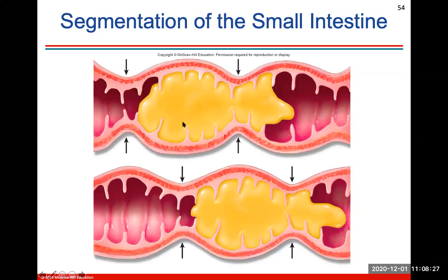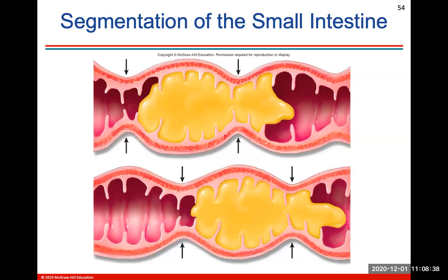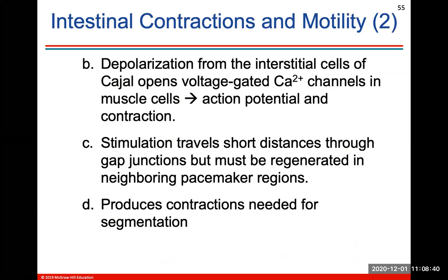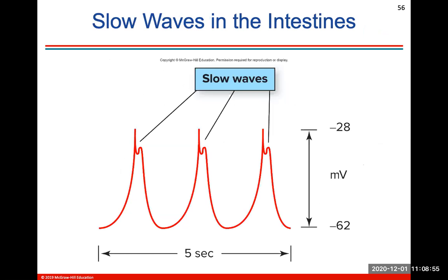Segmentation mixes things and then pushes it forward — that's what segmentation is. It mixes, pushes it forward, mixes, pushes it back. Peristalsis had more of a squeezing motion and occurred in the esophagus. These voltage-gated calcium channels produce the action potentials needed for the segmentation, giving these slow wave-like action potentials to squeeze or segment and mix the food along.